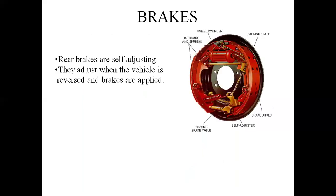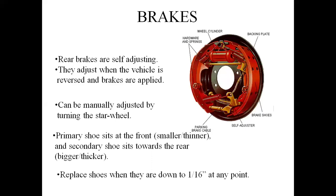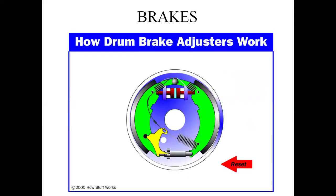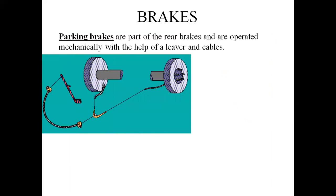Rear drum brakes are self-adjusting — they adjust when the wheel is reversed and brakes are applied. They can also be manually adjusted. The parking brake, also called the handbrake, uses a hand lever to apply the parking brake.